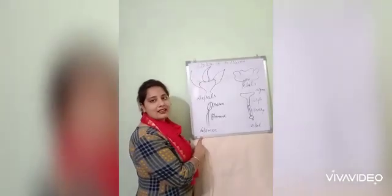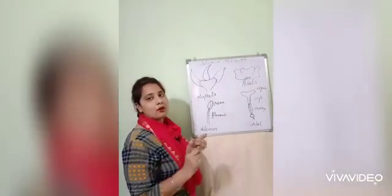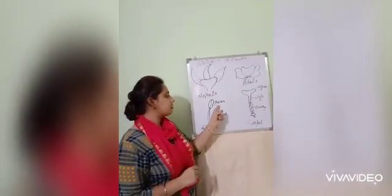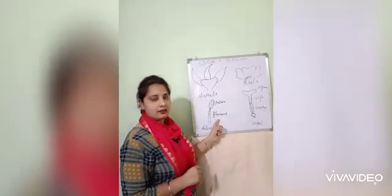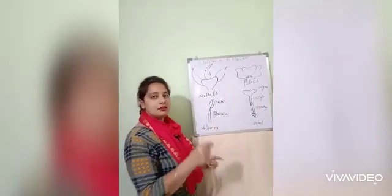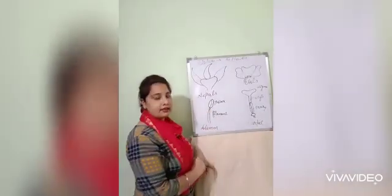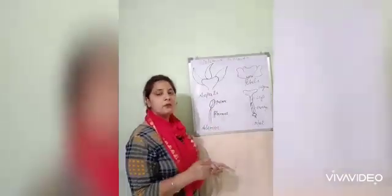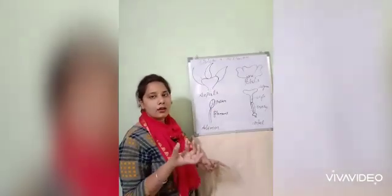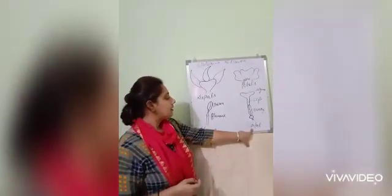Next is your stamen — that is the third whorl of a flower. The stamen is the male reproductive part and consists of two parts: first is your anther and filament. The filament is a long cylindrical tube-like structure which attaches to the anther. The anther is a bilobed structure which consists of pollen grains.